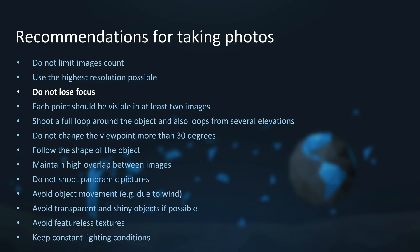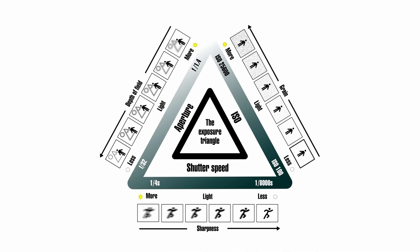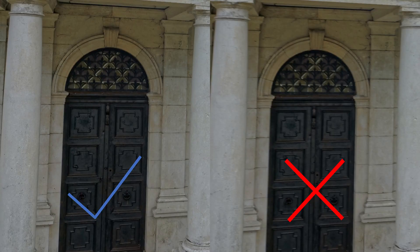Next: do not lose focus. RealityCapture needs the photos to be properly exposed, in focus, without any motion blur, and with a minimum amount of noise. You need to adjust your camera settings accordingly, and the settings can differ from situation to situation. You can shoot in automatic mode, but if you want more control, shoot in manual mode. You need to find a balance between ISO, shutter speed, and aperture. Higher ISO brightens the image but introduces more noise. Faster shutter speed eliminates motion blur but darkens the image. Smaller aperture (higher f-stop number) increases depth of field but also darkens the image. You can also help yourself with tripods, monopods, and lights. After you have the images, check their focus and remove blurry ones, reshoot them if possible.